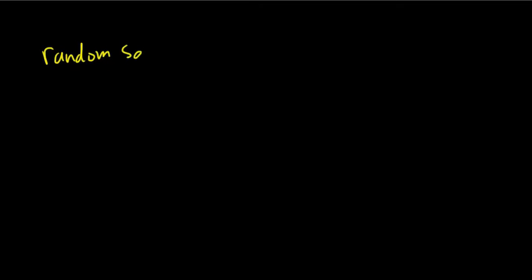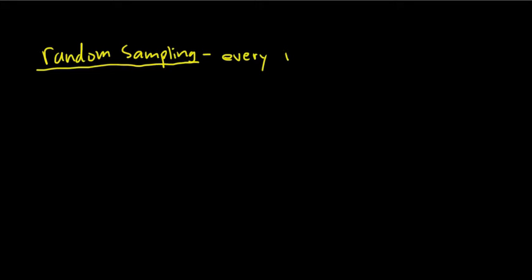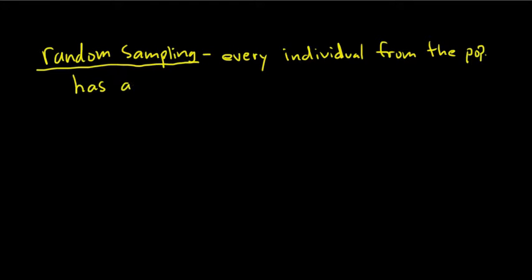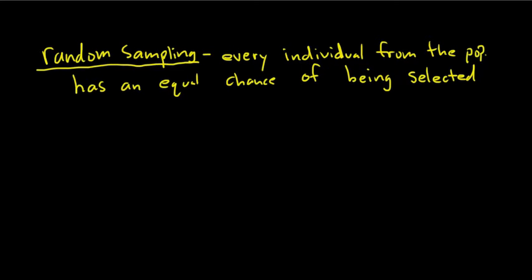Random Sampling is when every individual from the population has an equal chance of being selected. So if you were in a classroom and you had everyone put their names into a bag, and you shuffled the bag and you took a name, that would be a random sample.